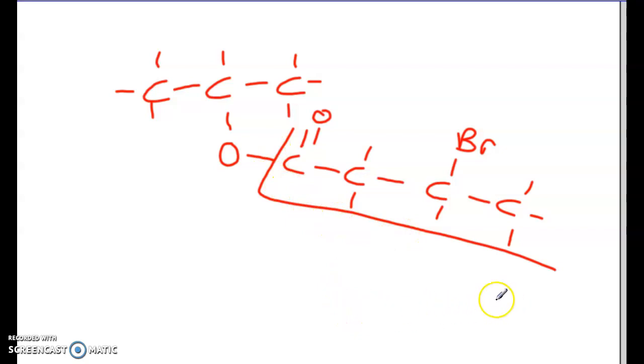So your parent is always written last. So here we have four. So this would be butanoate. Now, if you have branches or different things on this section, you would actually still number and report it as normal. But it has to be on the same side as the butanoate part.